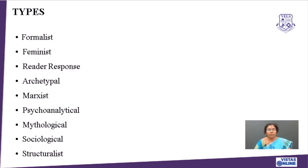Talking about the types, we have got many types of literary interpretation. The first one is formalist, then feminist, reader response, archetypal, Marxist, psychoanalytical, mythological, sociological, and structuralist.